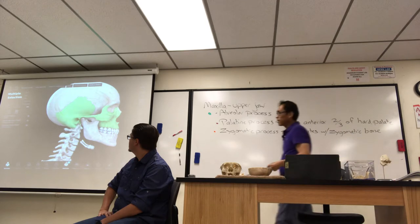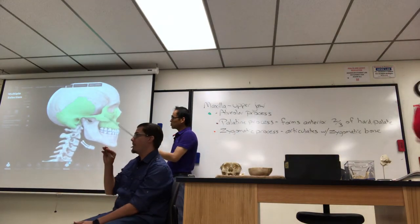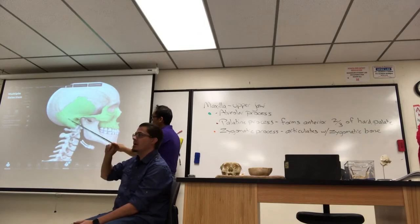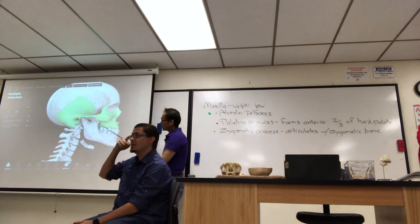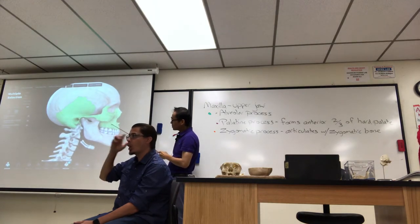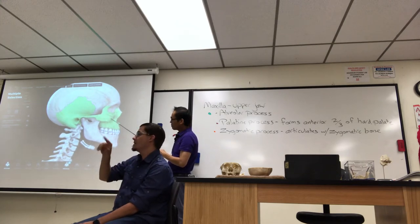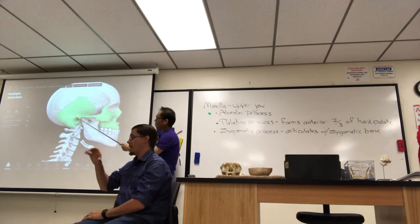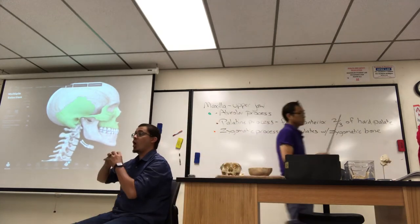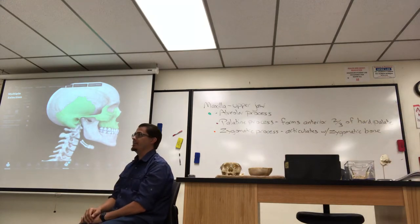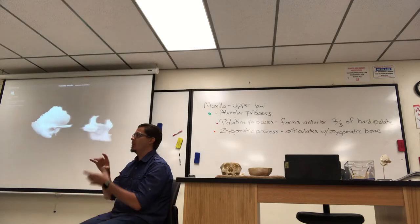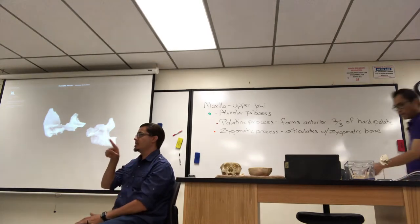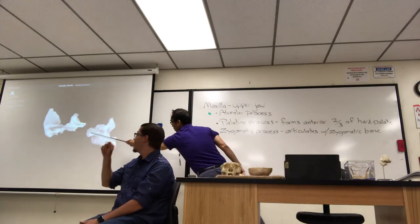I've got three bones highlighted — maxilla, zygomatic bone, and temporal bone. This is the zygomatic process of the temporal bone. This is the temporal process of the zygomatic bone. Maxilla also has a zygomatic process — so you have the zygomatic process of the maxilla articulating with the zygomatic bone, and the zygomatic process of the temporal bone also articulating with the zygomatic. All three bones articulate together.